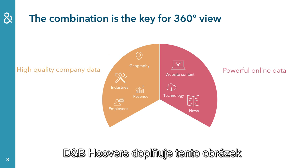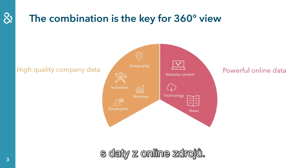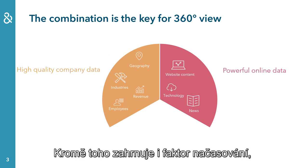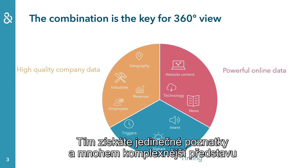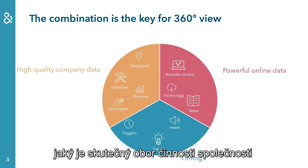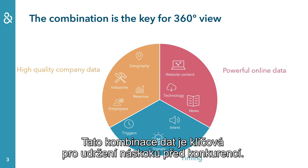DMP Hoovers completes the picture by combining functional company data with data from online data sources. In addition to that, it includes the factor of timing, which tells you when to interact with the company. This leads to unique insights and a more complete picture of what a company really does and what ambitions it has. The combination of data is the key to stay ahead of the competition.